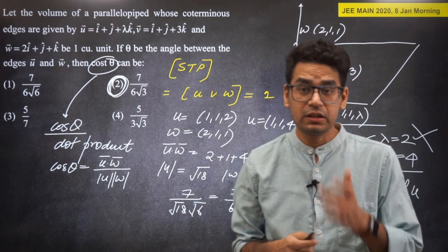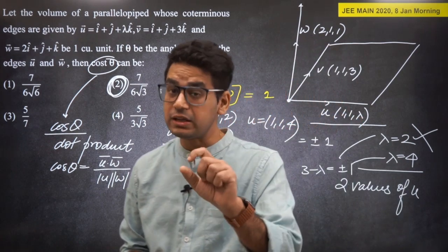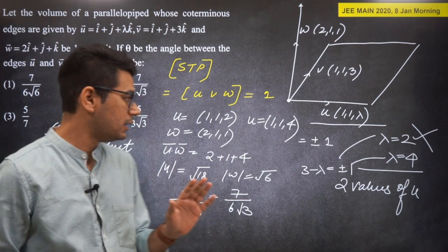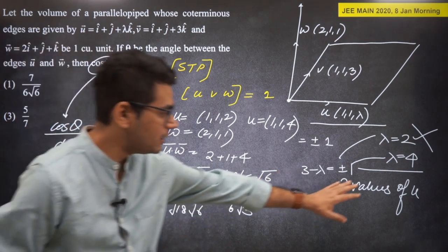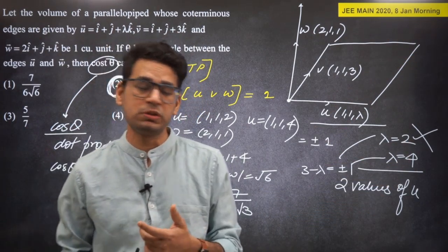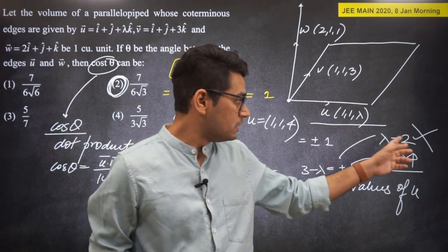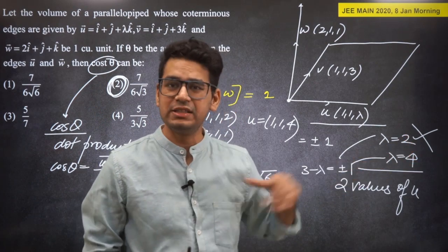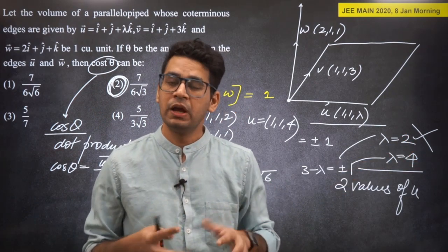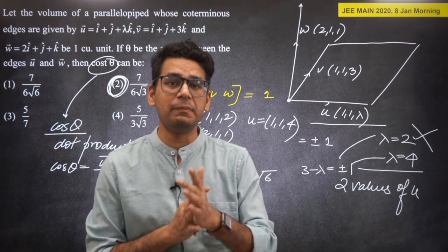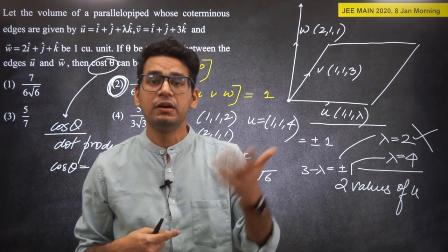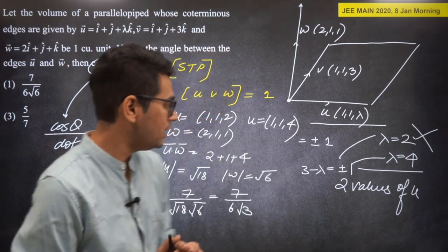This question was a bit lengthy but not difficult. The key lesson: when lambda has two values, you must check both. Many students get confused when the first lambda doesn't give an answer and lose confidence — but don't lose confidence, check the second value too.